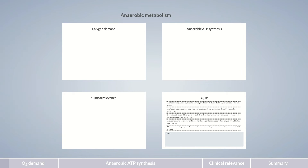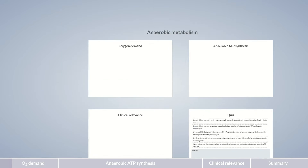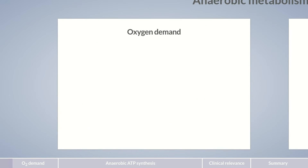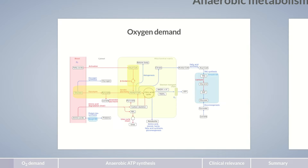Energy Metabolism Part 8. What are the differences between aerobic and anaerobic metabolism? Have you noticed that glycolysis, beta-oxidation, and the citric acid cycle are always referred to as aerobic metabolic processes, although none of their reactions actually require oxygen?